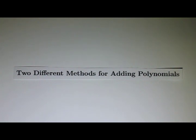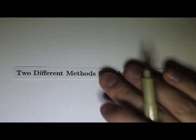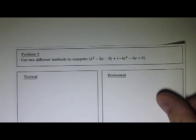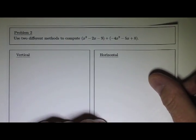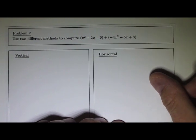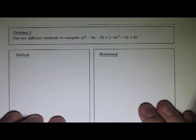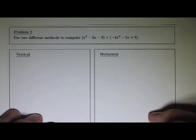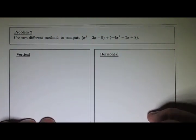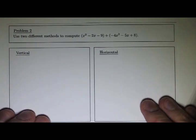In this video, I'm going to look at two different methods for adding polynomials. Problem two says to use two different methods to compute the sum: x squared minus 2x minus 9 plus negative 4x squared minus 5x plus 8. These are both second degree polynomials because the highest power in each of them is 2.